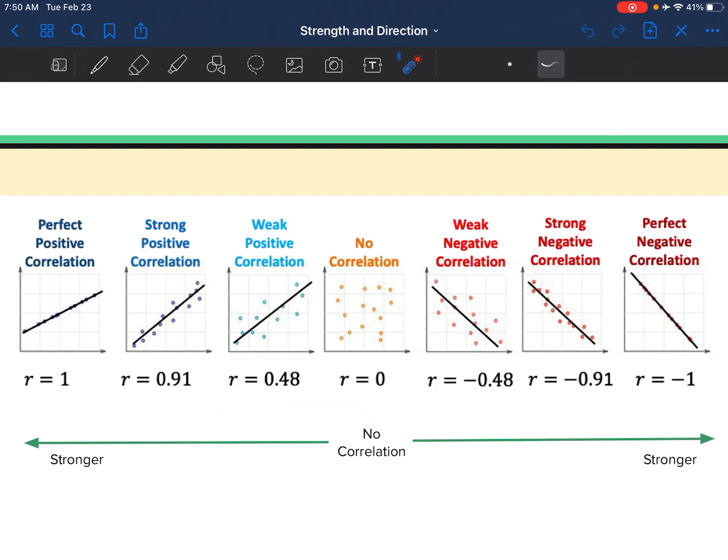And the same for our negatives. This is a negative 0.48. It is weak because it's closer to zero than it is to one. And negative 0.91 is going to be closer to one. It's going to be very strong.